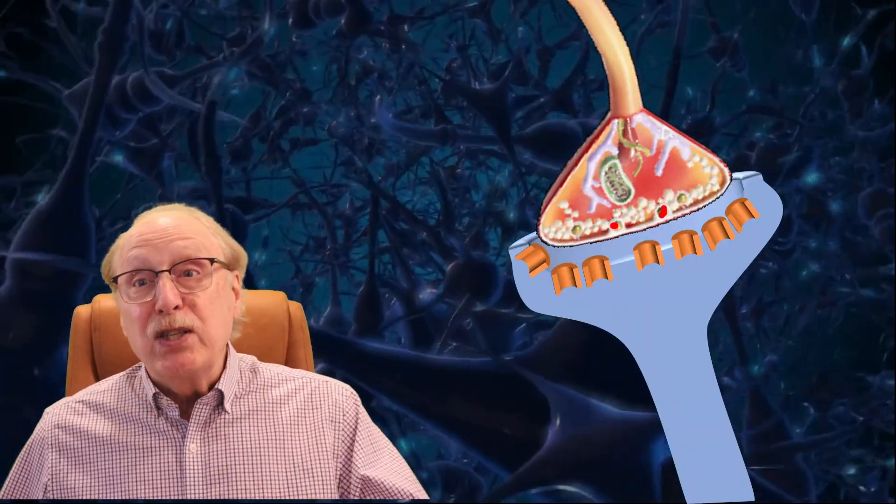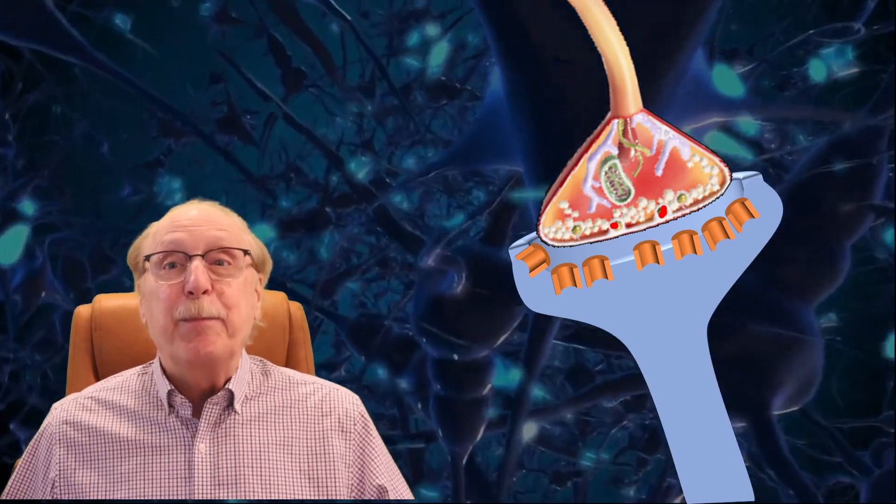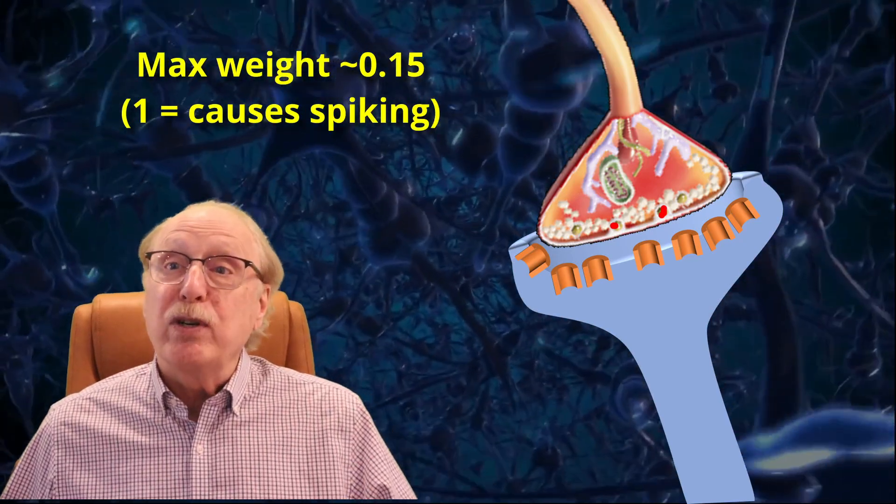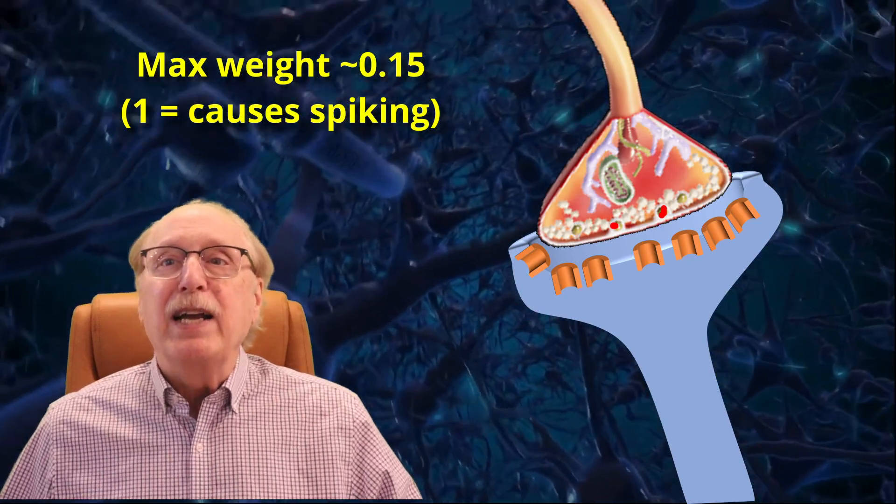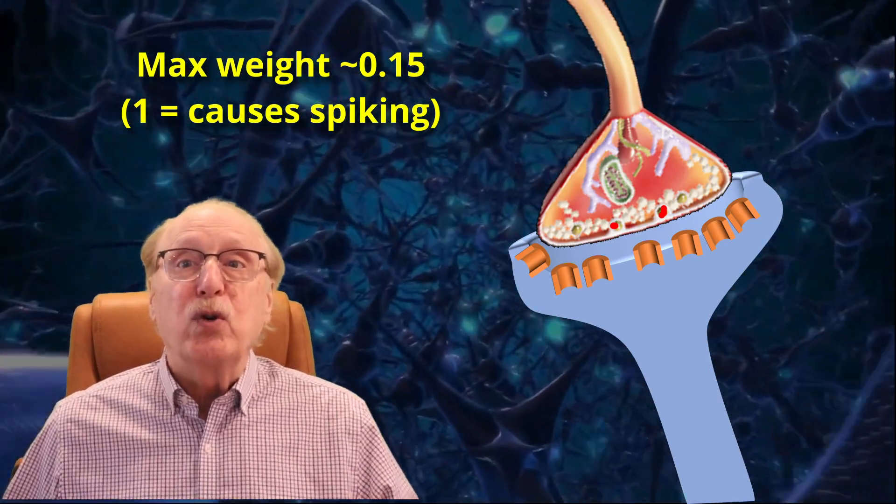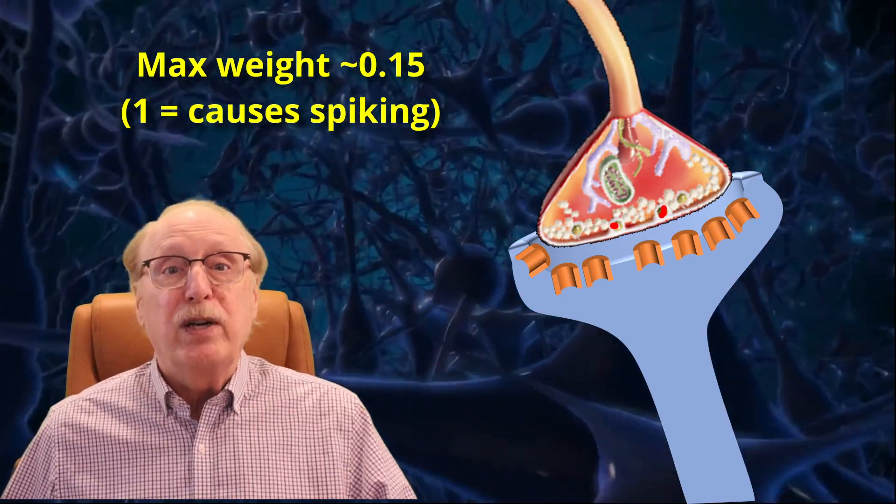The synapse weight is related to the number of gated ion channel proteins on the postsynaptic side of the synapse. We can assume that there is a physical size limit to the synapse itself, so there is also a limit to the number of ion channels which can be stuffed in. Experimentally, the maximum synapse weight observed is about 0.15, with 1 being defined as sufficient for a single source spike to cause the target neuron to fire.